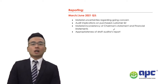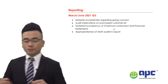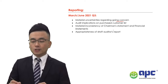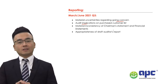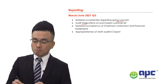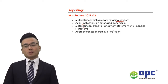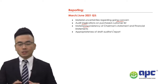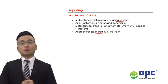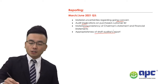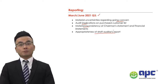At the reporting stage, certain areas you need to be ready for include going concern, audit implications regarding IVOS areas such as intangible assets, and material inconsistency of other information such as the chairman's statement versus the financial statements. Also consider whether the draft auditor's report is appropriate — make sure to revise this question from March/June 2021, question 3.